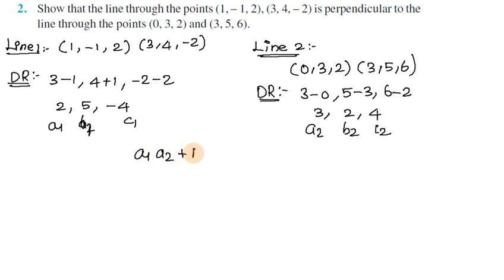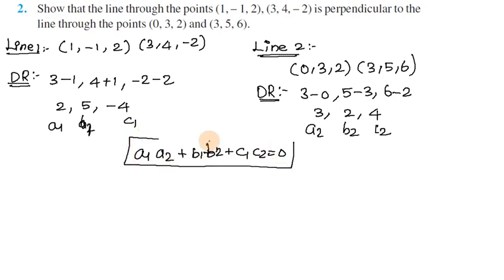To prove two lines are perpendicular, we use the condition: A1·A2 + B1·B2 + C1·C2 = 0. If this equals zero, then the lines are perpendicular.